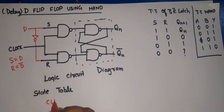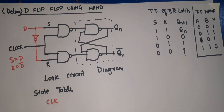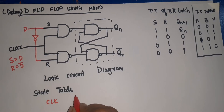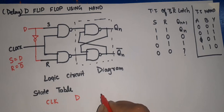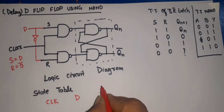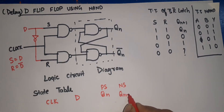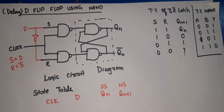Now I am going to draw the state table of the D flip-flop. When we draw the state table, the first input will be the control input, that is clock; the second input is D; the present state is Qn; and the next state is Qn+1.